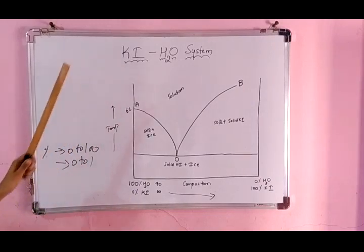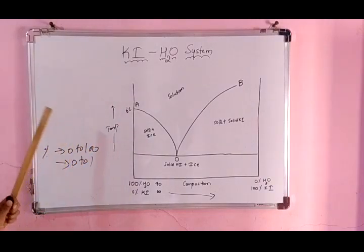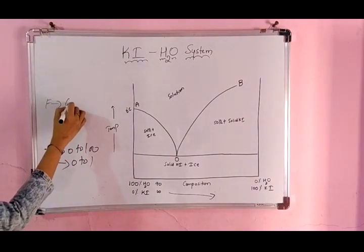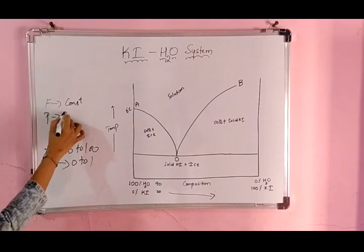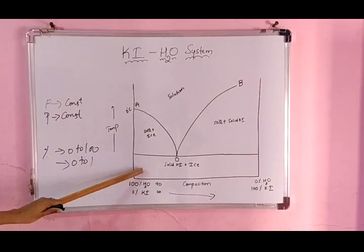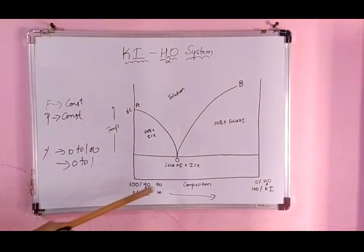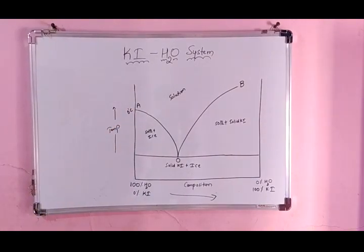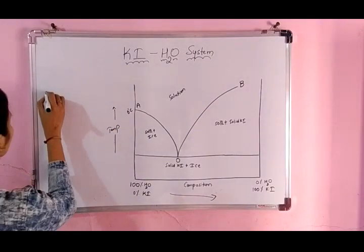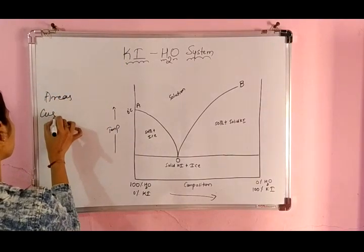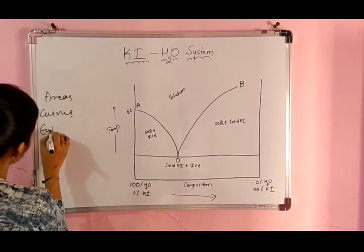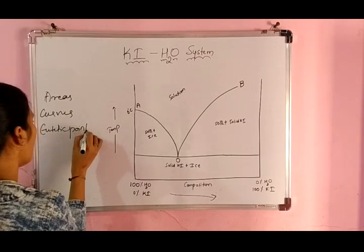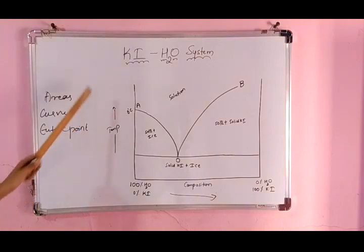In this two-component system, three degrees of freedom are required, but one degree of freedom — pressure — is kept constant throughout. So temperature and composition versus diagram is plotted. Just as we learned in the one-component system with areas, curves, and triple point, here we will learn areas, curves, and instead of triple point, the eutectic point.